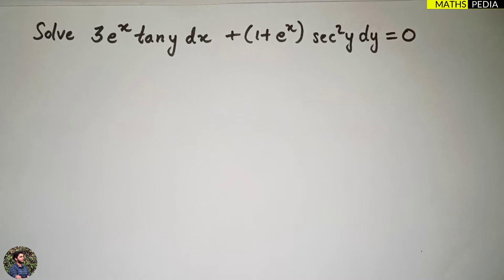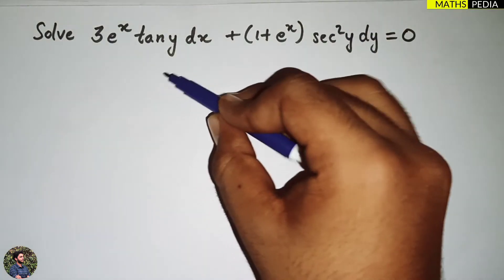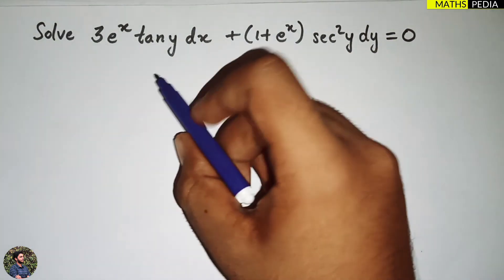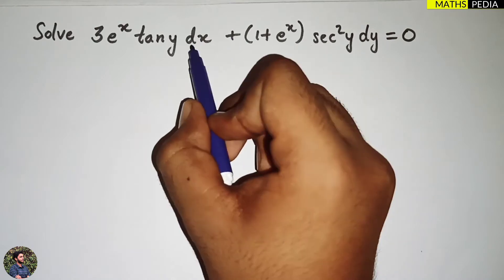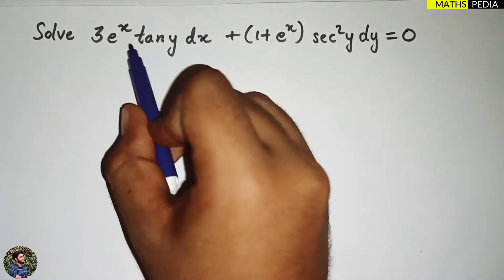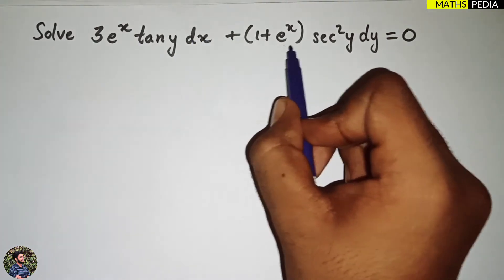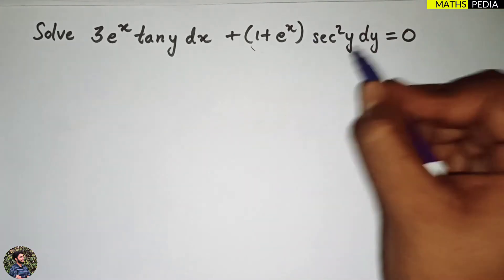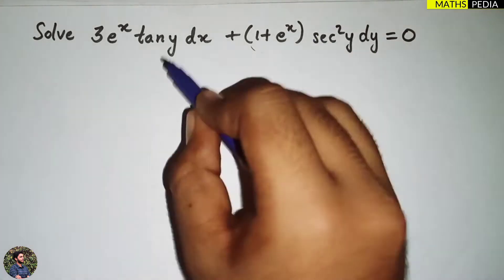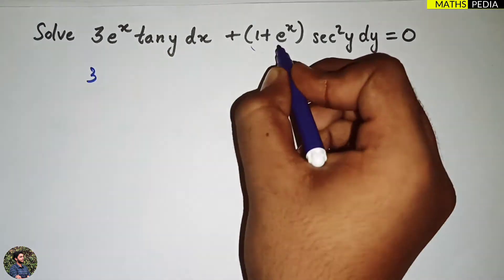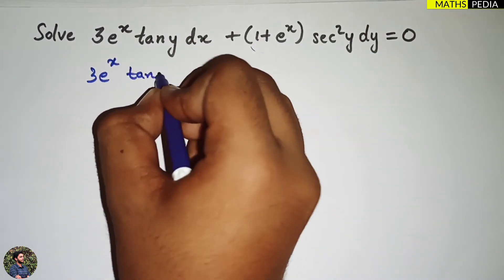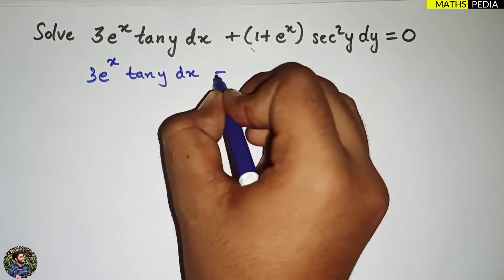In this video we are going to solve one problem based on differential equations. We can apply the method of variable separable — we can easily separate the variables. With dx, the x terms should be there, and with dy, the y terms should be there. I'll shift one term to the RHS: 3 times e^x times tan(y) dx equals...